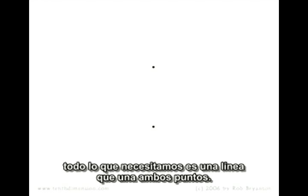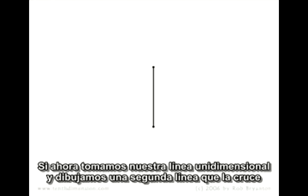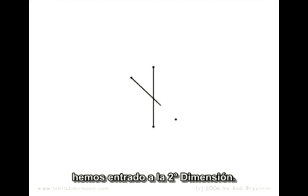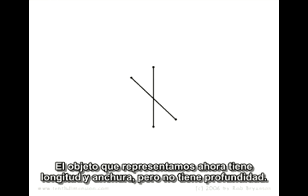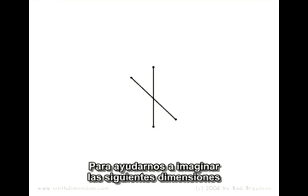To create the first dimension, all we need is a line joining any two points. A first dimensional object has length only, no width or depth. If we now take our first dimensional line and draw a second line crossing the first, we've entered the second dimension. The object we're representing now has a length and a width, but no depth.